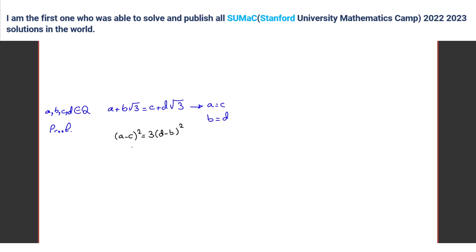Wait, let me write this correctly: a minus c is equal to square root of three times d minus b. Right?